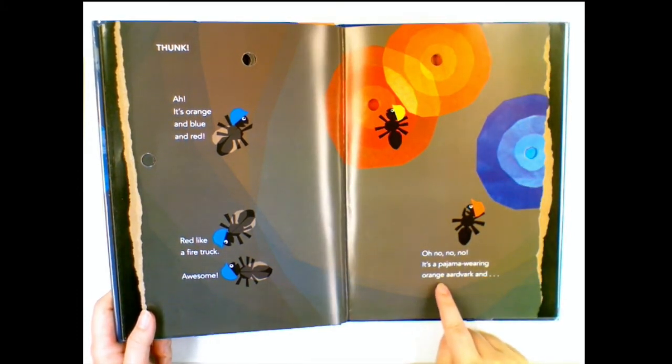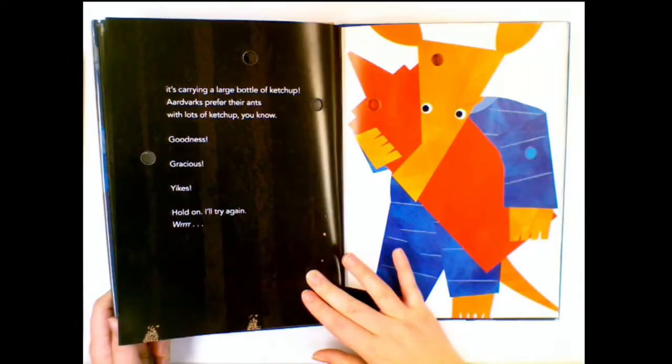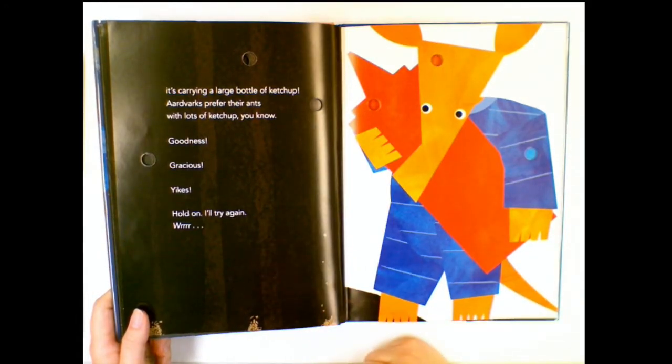Oh no, no, no. It's a pajama wearing orange Aardvark and it's carrying a large bottle of ketchup. Aardvarks prefer their ants with lots of ketchup, you know?